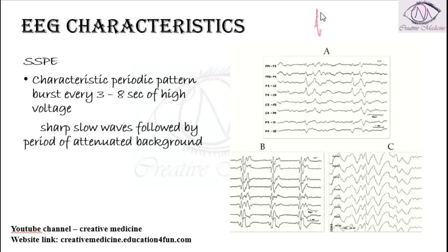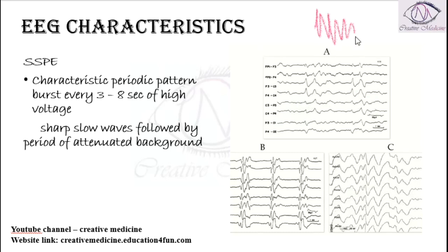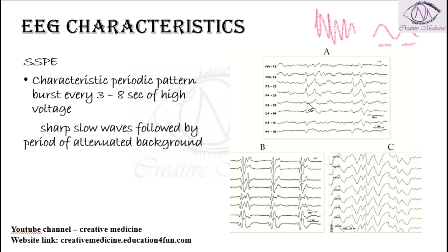These bursts are actually sharp slow waves. There are faster waves and slower waves. The slower waves have an attenuated background, and in the middle you will see these bursts again — there is an attenuated background, and then again bursts of 3 to 8 seconds.